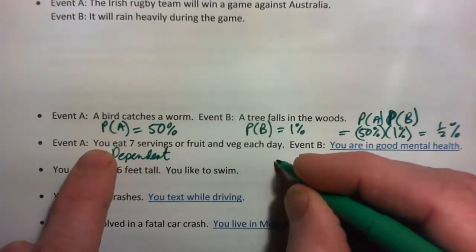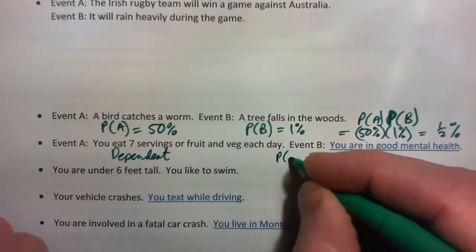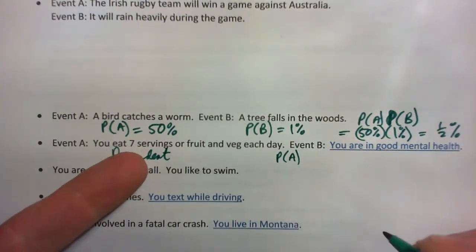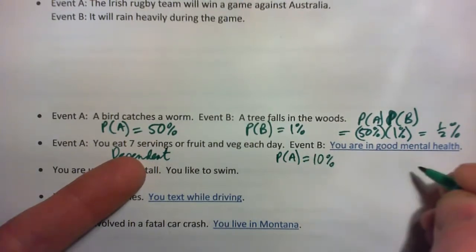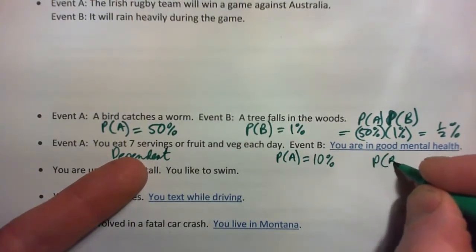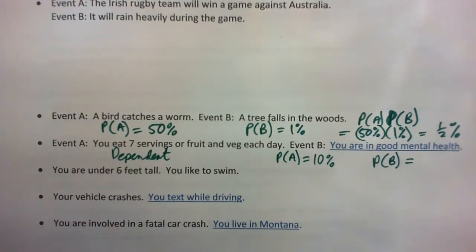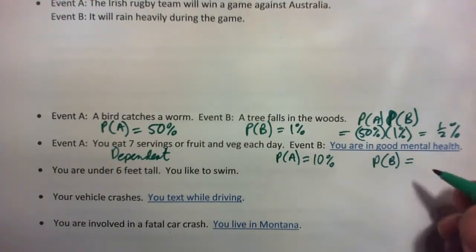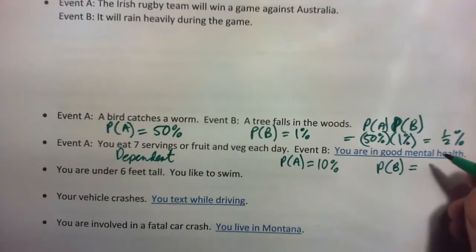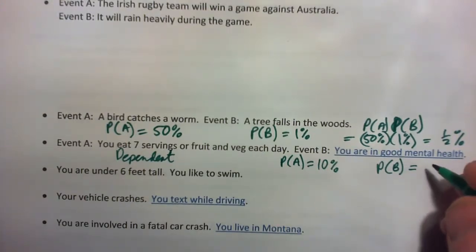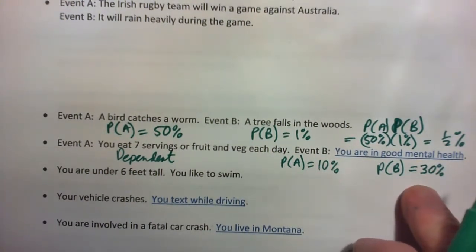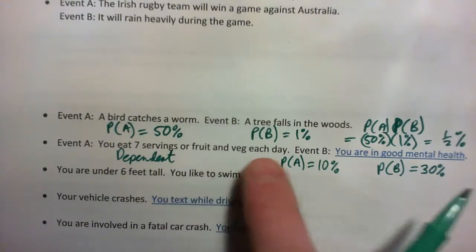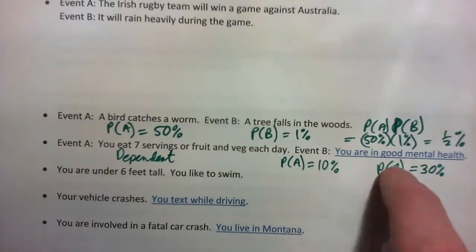Because they're dependent, we can't use the product formula with these two events. Let's say the probability of somebody eating at least seven fruits or vegetables a day is 10%, and the probability of somebody having good mental health is about 30%. We can't just multiply these, because these are dependent events.